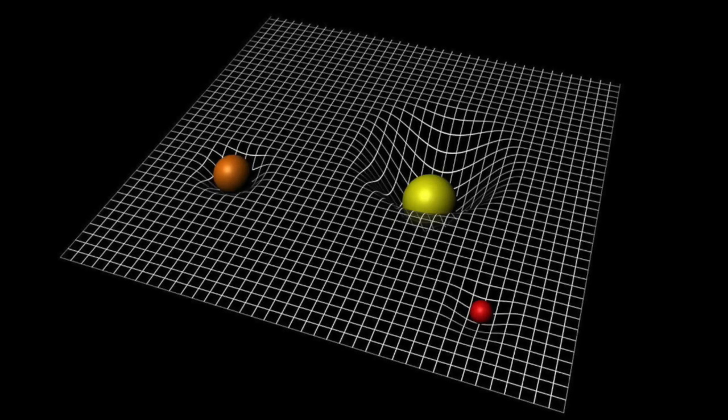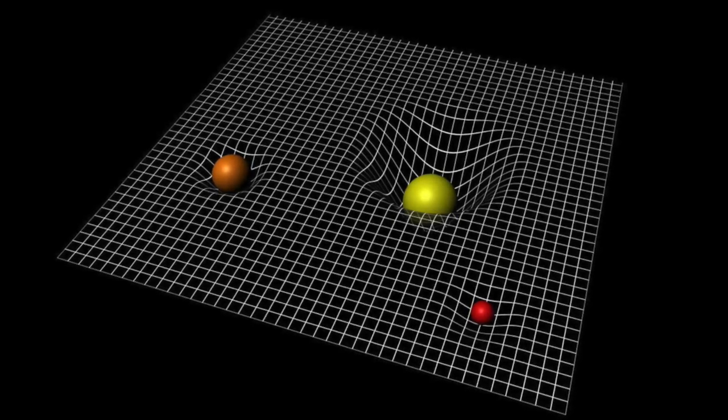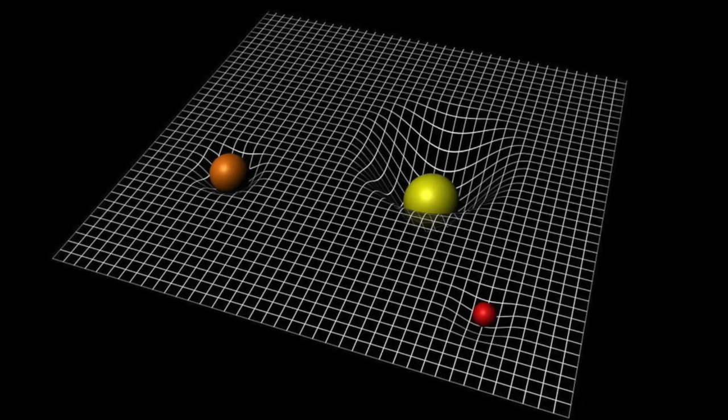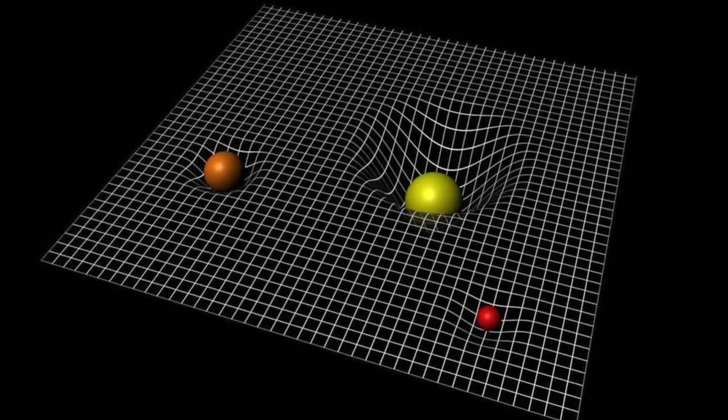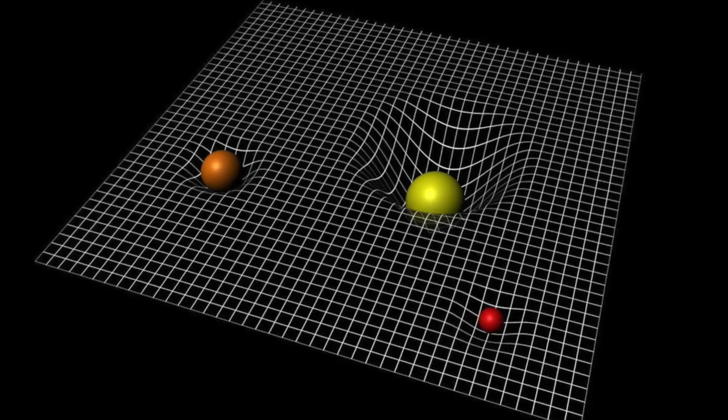The General Theory of Relativity is Albert Einstein's theory of gravity, which describes gravitational forces in terms of the curvature of space-time caused by the presence of mass.